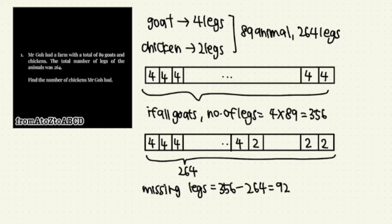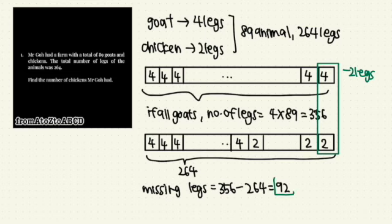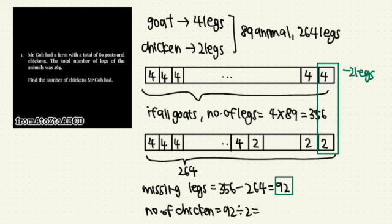Because I don't have all goats, I have a mixture of goats and chickens. So if each replacement, for example I use a different color, for each replacement like this, it will be 2 legs. Minus 2 legs. So I minus a lot of times such that in total I minus 92 legs. So how many chickens are there for me to minus 92 legs? Every 1 chicken minus 2. So how many chickens are there? I will just do 92 divided by 2. 46.